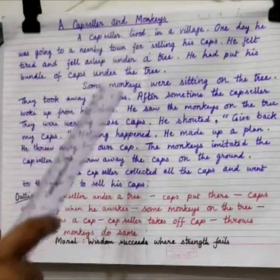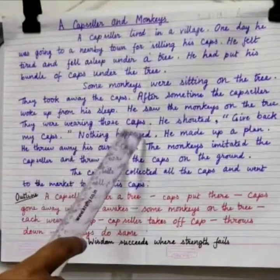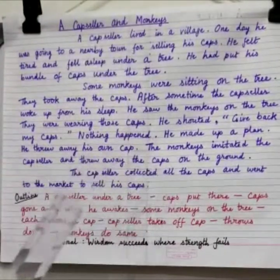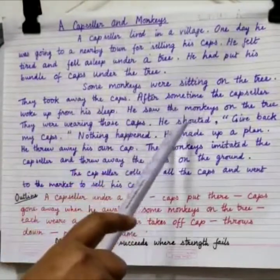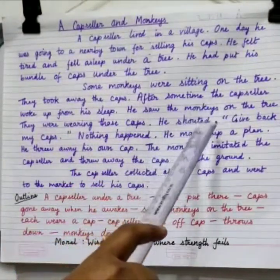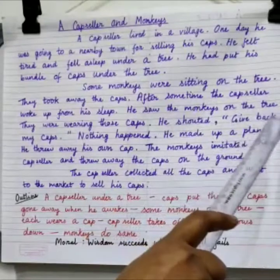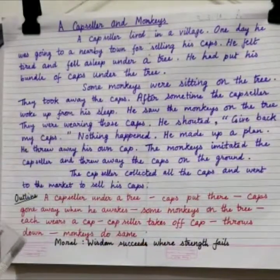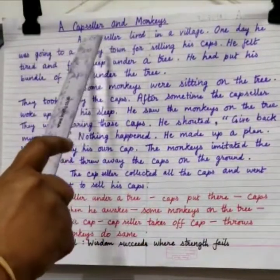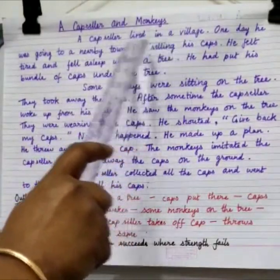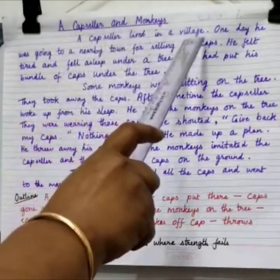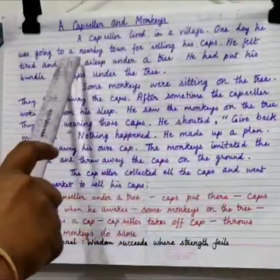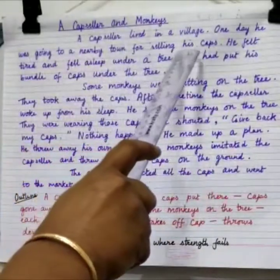The story has a crisis, climax, and result. We have used dialogue — 'Give back my caps' — and also the story should be written in the past tense. For example: 'A cap-seller lived in a village. One day he was going to a nearby town for selling his caps.'